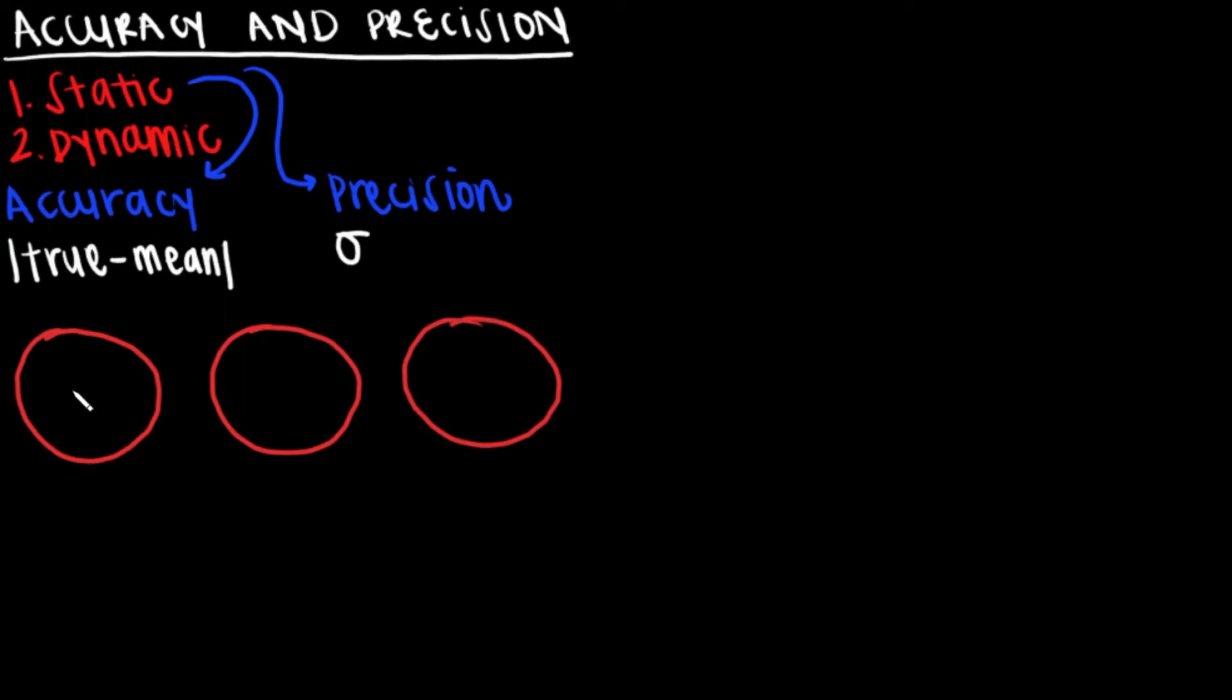Precision is the reproducibility of the measurement. This performance characteristic is essentially the standard deviation of the measured values. It is important to recognize that the accuracy is different from the precision.